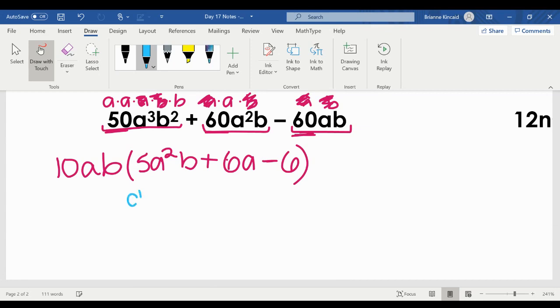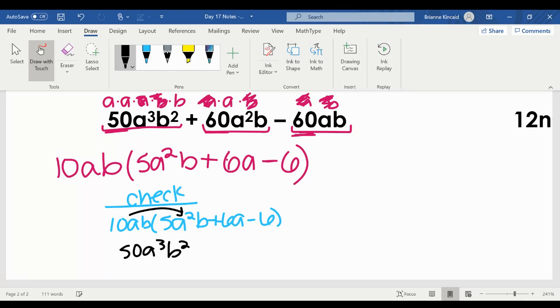So we want to do our check. As you learn more challenging types of factoring, the check part is going to become increasingly more important. So first term, 10 times 5 is 50. a times a² is a³. b times b is b². Multiply by the middle term. 10 times 6 is 60. a times a is a². And then I bring the b back in as well. And then by the third term, 10 times negative 6 is negative 60. Bring in the ab, which is what we started with. We are good on that one also.